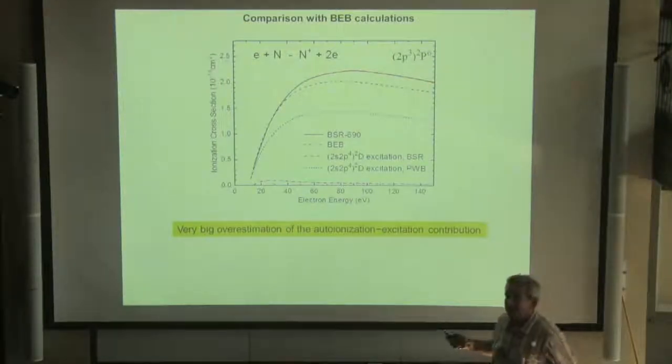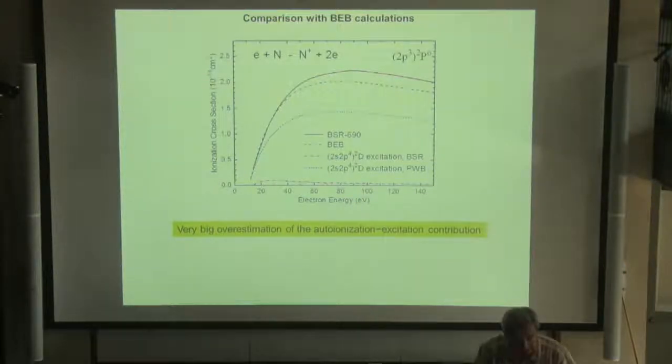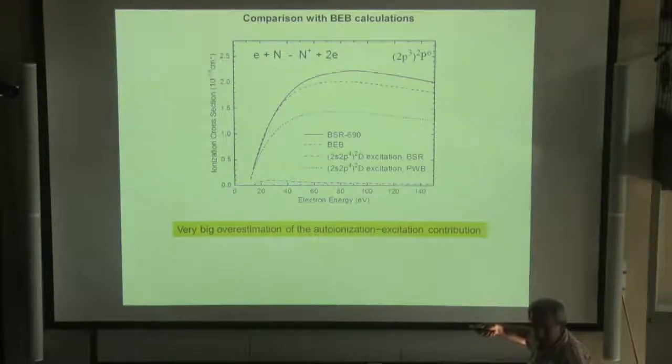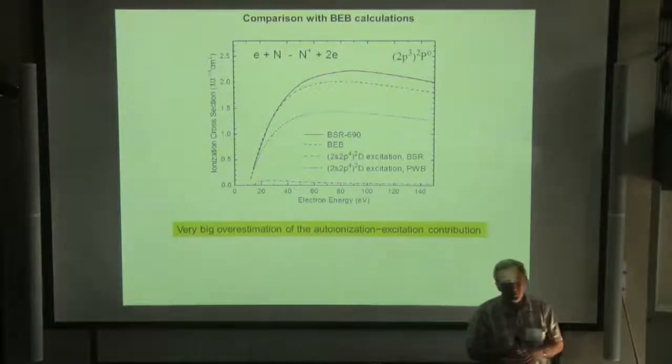One more question here I want to discuss, because, for example, very popular DWB calculation for estimating cross-sections. Here, we see the DWB calculation is almost consistent with ours, but it is accidental. Because DWB calculation includes huge contribution from the excitation-autoionization excitation. Our calculation is ten times less. So if we take our calculation for autoionization, DWB calculation will be much less than experiment. So DWB calculation for this complex process may not be applicable.